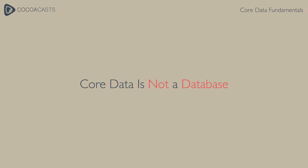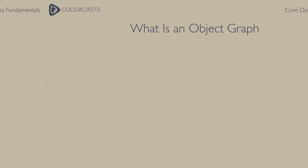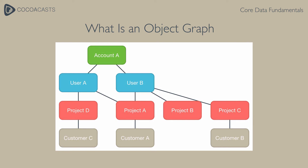You have probably heard and read about CoreData before watching this video. That means you already know that CoreData is not a database and that it manages your application's object graph. Both statements are true, but what do they mean? An object graph is nothing more than a collection of objects that are connected with one another, and the CoreData framework excels in managing complex object graphs.